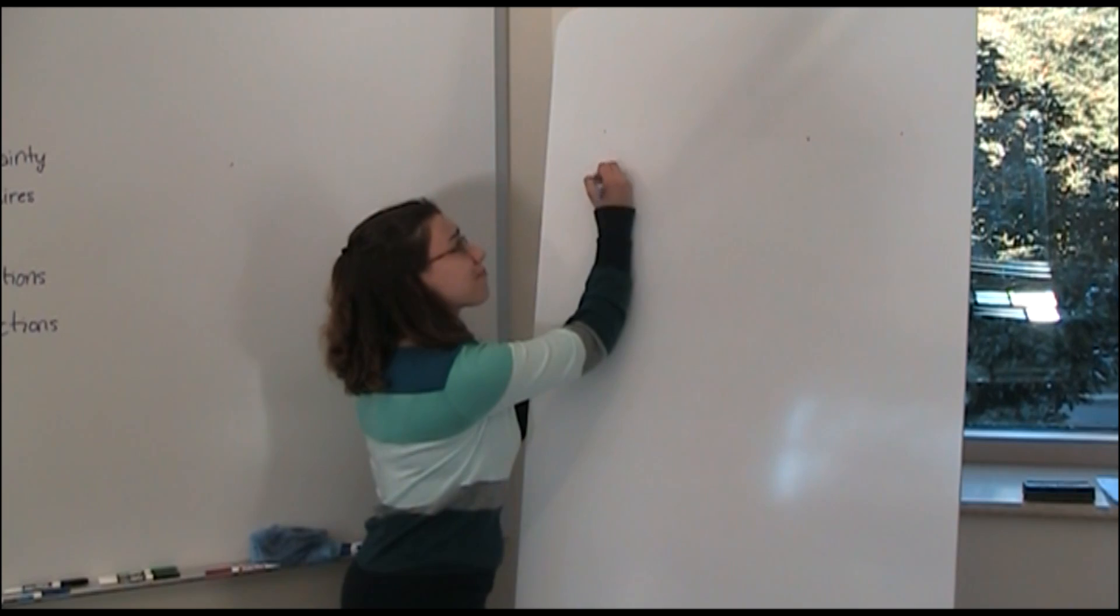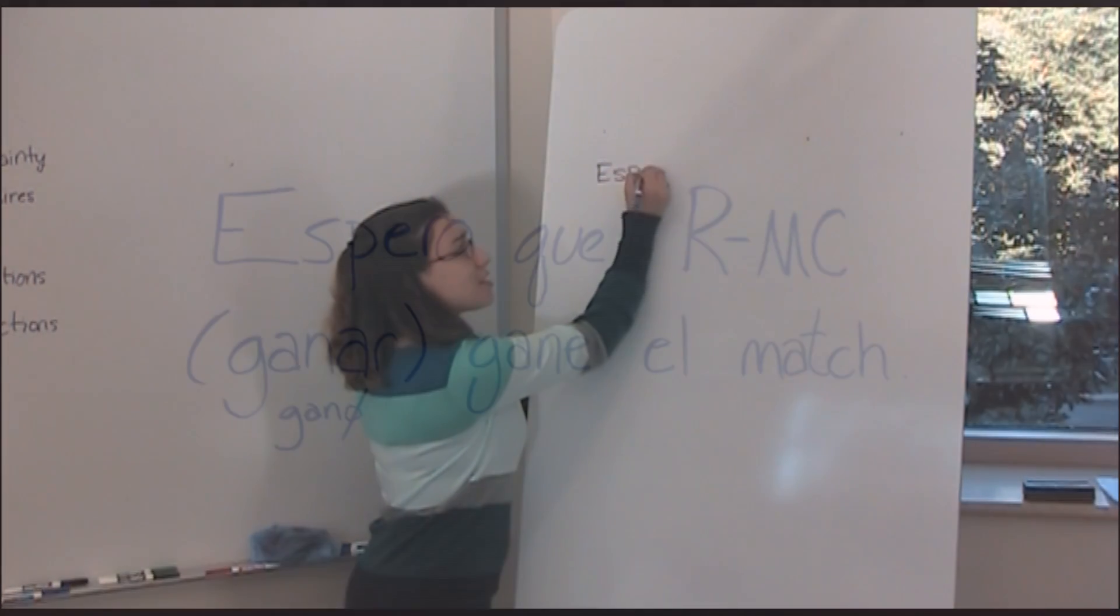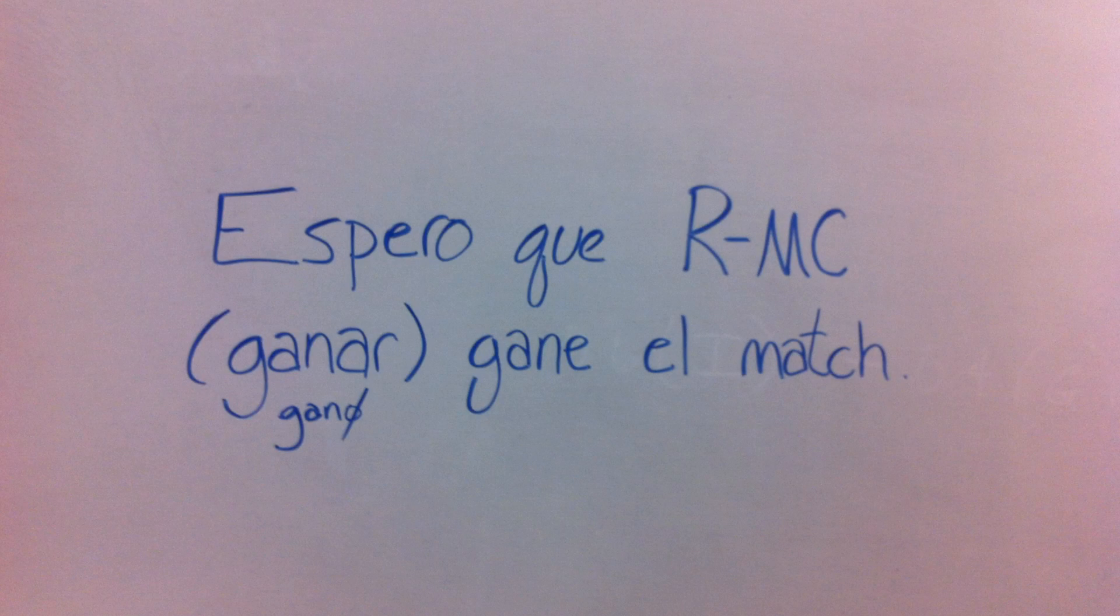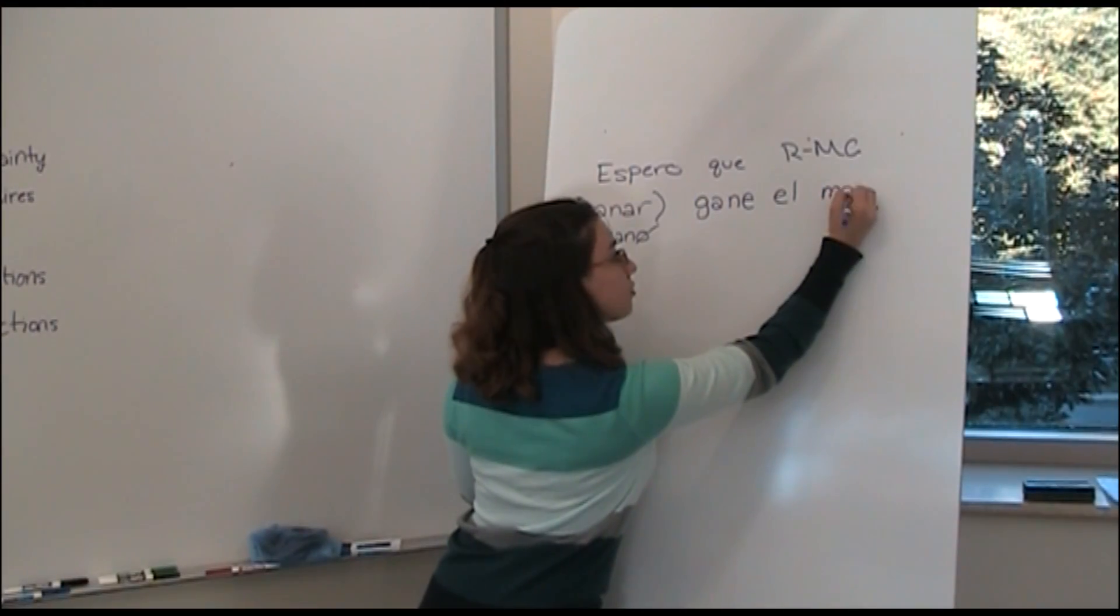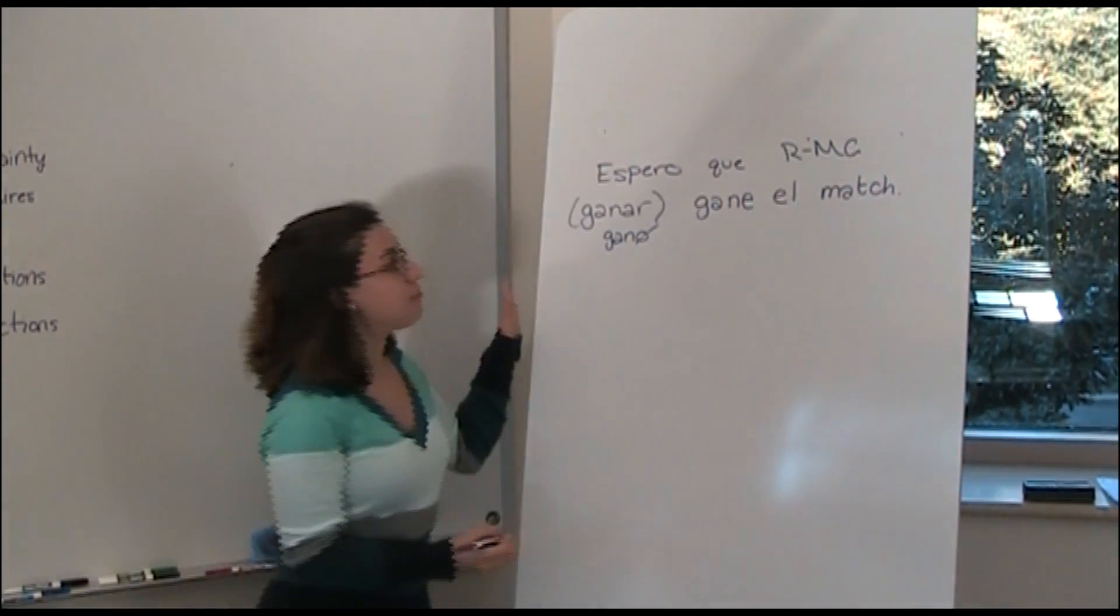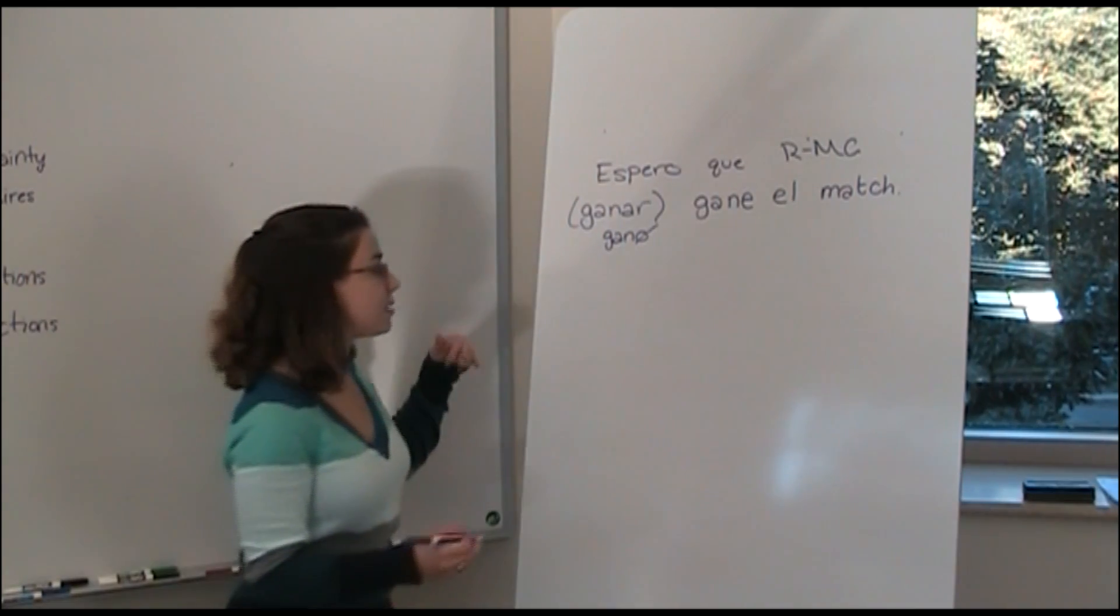Some examples of the subjunctive using some of these que expressions. We could say espero que RMC, and then I'm going to use the verb ganar to win. So again, we take the yo form, put a gano, drop the o, and then add the opposite ending. And since RMC is a singular third person subject, we'll go to gane, el match. So I hope that RMC wins the game, wins the match.